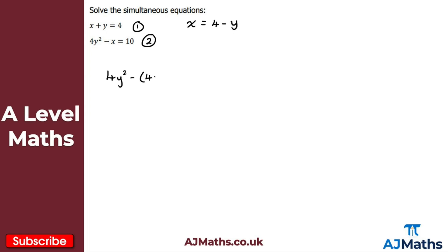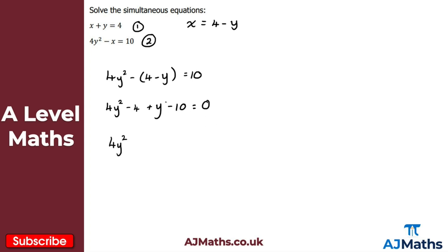I substitute x equals four minus y into equation two. We get four y squared minus (four minus y), and I put this in brackets to keep track of signs — this equals ten. Multiplying through by the minus sign gives four y squared minus four plus y equals ten. Setting this equal to zero by subtracting ten from both sides: four y squared plus y minus fourteen equals zero.